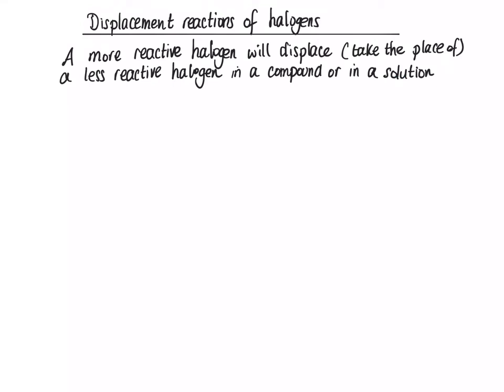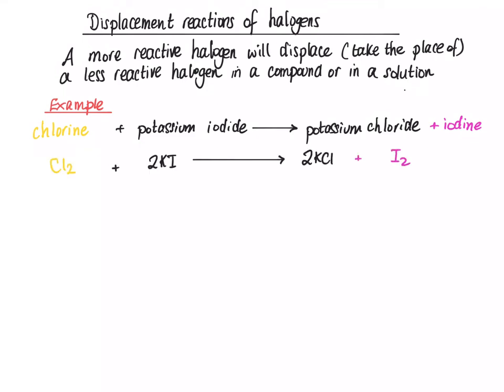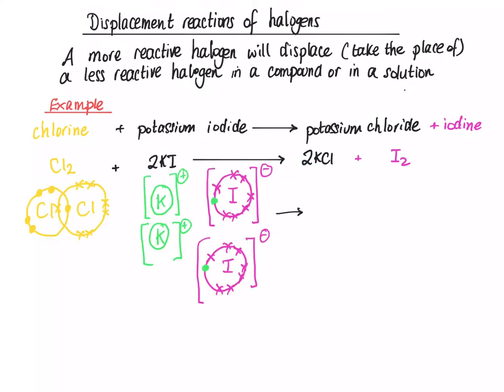And the less reactive halogen in a compound or solution is always present as the halide. So, bromide Br⁻, or iodide I⁻. For example, if we react chlorine with potassium iodide, the products that you get are potassium chloride and iodine. The chemical equation for this is Cl₂ plus 2KI goes to 2KCl plus iodine.